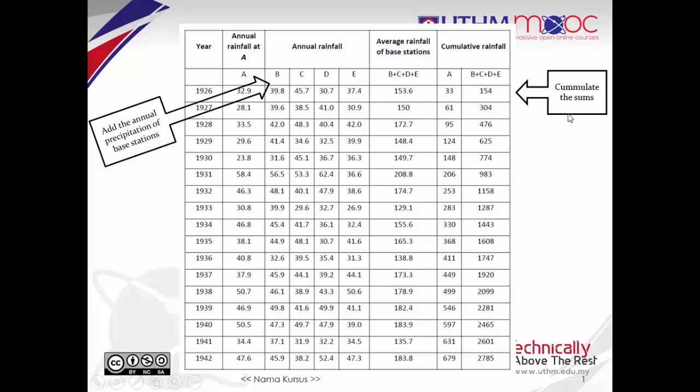Then accumulate the sums of step one. 154 plus 150 get 304. 304 plus 172.7 we get 476. And we have to do the rest of the calculations and fill in this column.